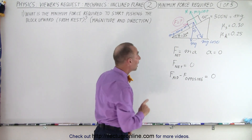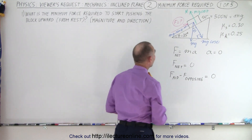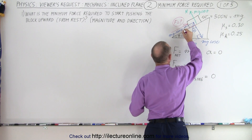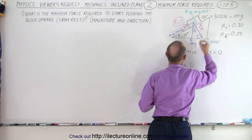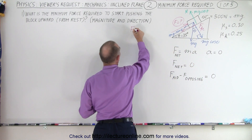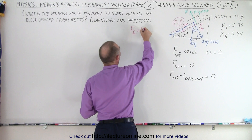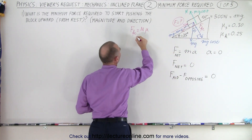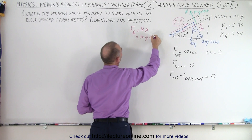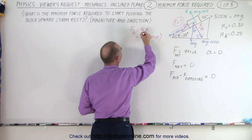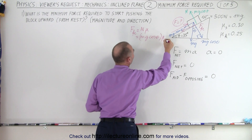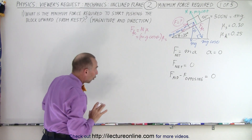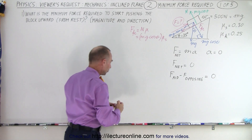We also have a friction force acting downward along the incline. By definition, the friction force equals the normal force times mu. The normal force is Mg cosine theta, so the friction force equals Mg cosine theta times mu sub s — the static coefficient of friction — because we're starting from rest and need to overcome static friction.